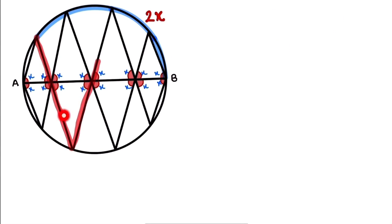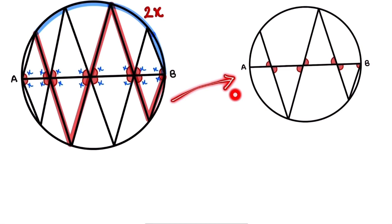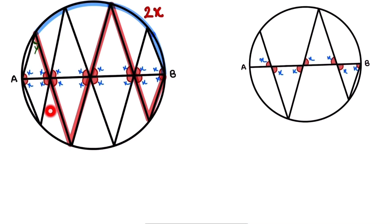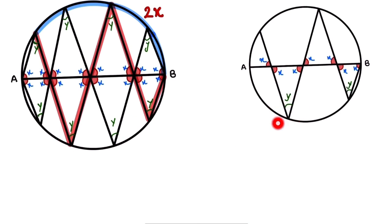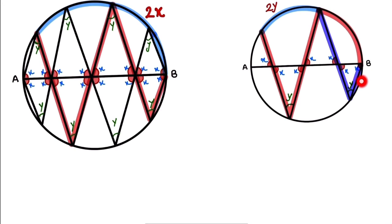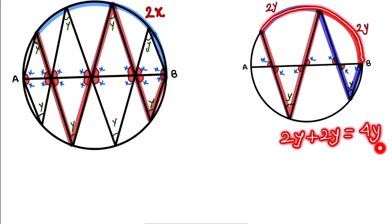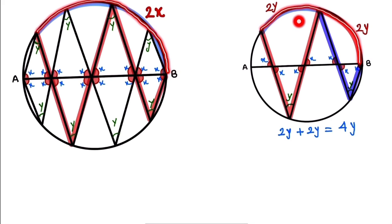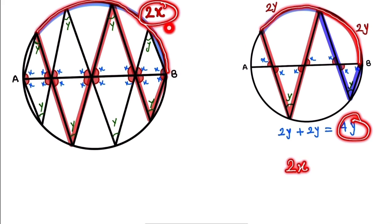Now we look at this part of the figure. All red angles are x. In this triangle, this angle is x and this angle is x, so the third angle is different — we let it equal y. Similarly, all these corresponding angles are y. Looking at this arc, this angle is y and this angle is y, giving arc 2y. The total arc here is 2y plus 2y, which equals 4y. We already found that arc equals 2x, so 2x equals 4y.